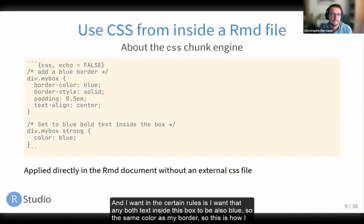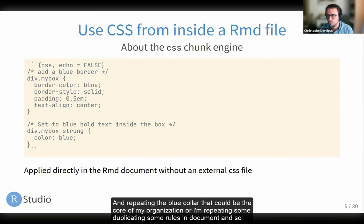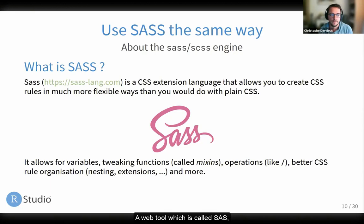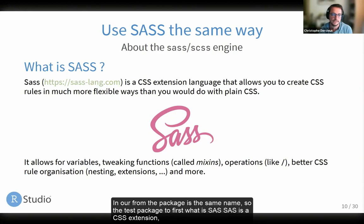The second CSS rule is: I want any bold text inside this box to also be blue — the same color as my border. This is how I can style differently from the default. But as you can see, I'm repeating the blue color — which could be my organization's color — duplicating rules in the document. Can I do that more efficiently, like a programming language, like functions in R? In fact, you can do that using a web tool called Sass, which exists since a long time but has recently been available in R through a package with the same name.